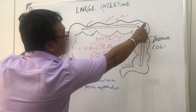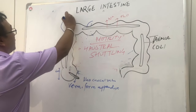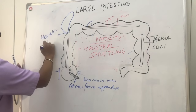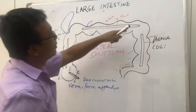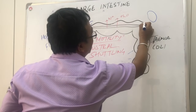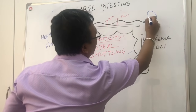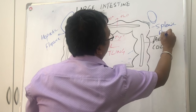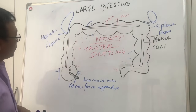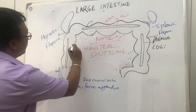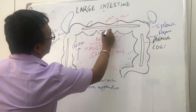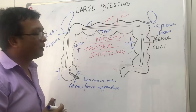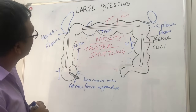The large intestine is fixed in two places. Where it meets the lower pole of the liver, we call it the hepatic flexure. Where it is present near the lower pole of the spleen — attached to the 11th rib — we call it the splenic flexure. In terms of dimensions: the cecum is 6 cm, the ascending colon around 12.5 cm, the transverse colon around 50 cm, and the descending colon around 25 cm, totaling around 1 to 1.5 meters.